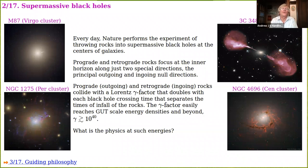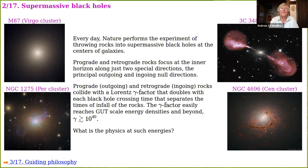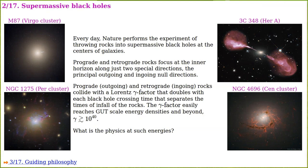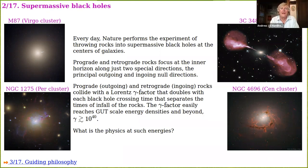At a horizon, there are just two directions orthogonal to the two-dimensional horizon surface, called outgoing and ingoing. If you throw in a prograde rock, it has extra centrifugal force and turns around, becoming outgoing at the inner horizon. Meanwhile, retrograde rocks have less centrifugal force and remain ingoing at the inner horizon. If you aim carefully, those outgoing prograde and ingoing retrograde rocks will collide. The energy with which they collide depends on the time you wait between throwing in the two rocks — each black hole crossing time that elapses, the energy increases by a factor of two.